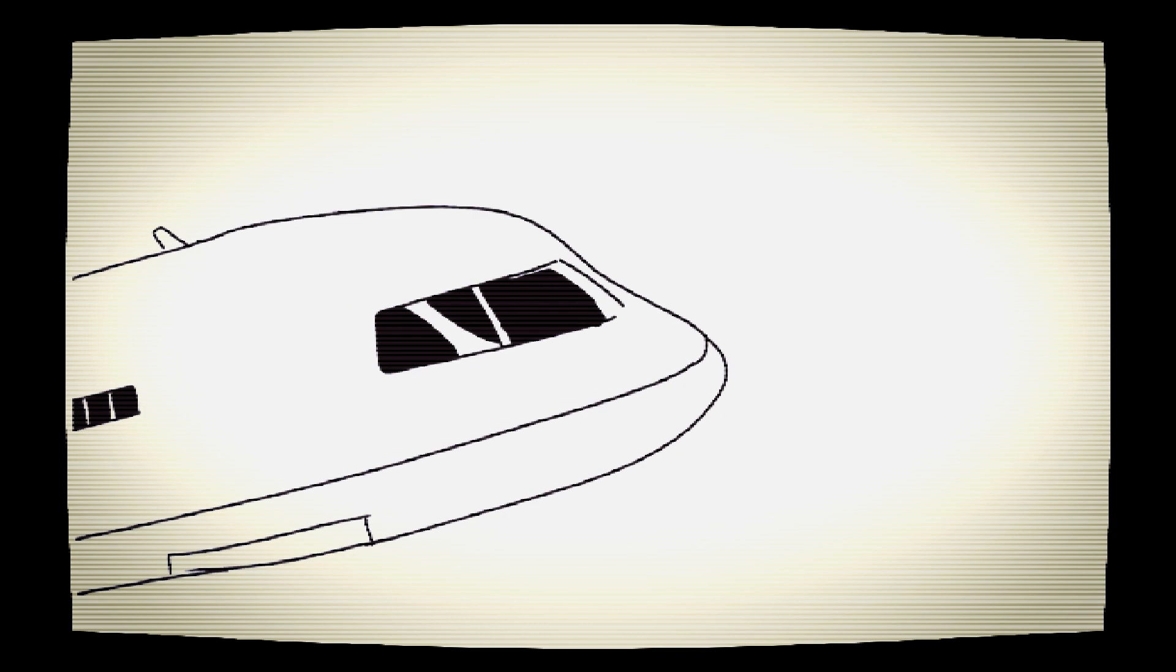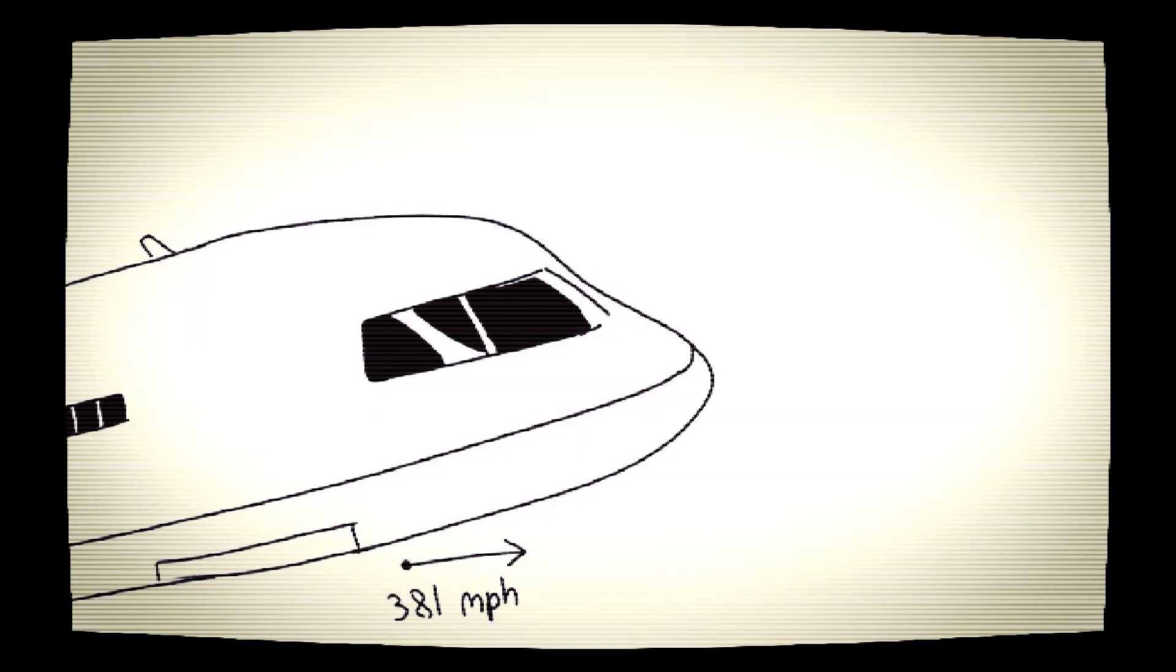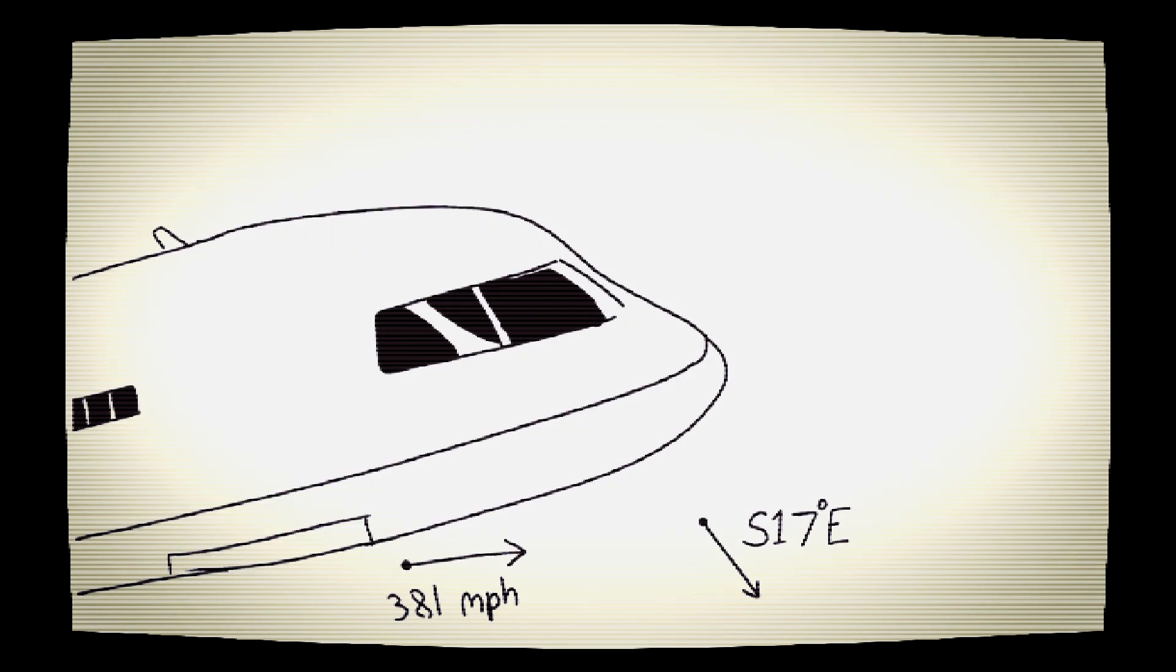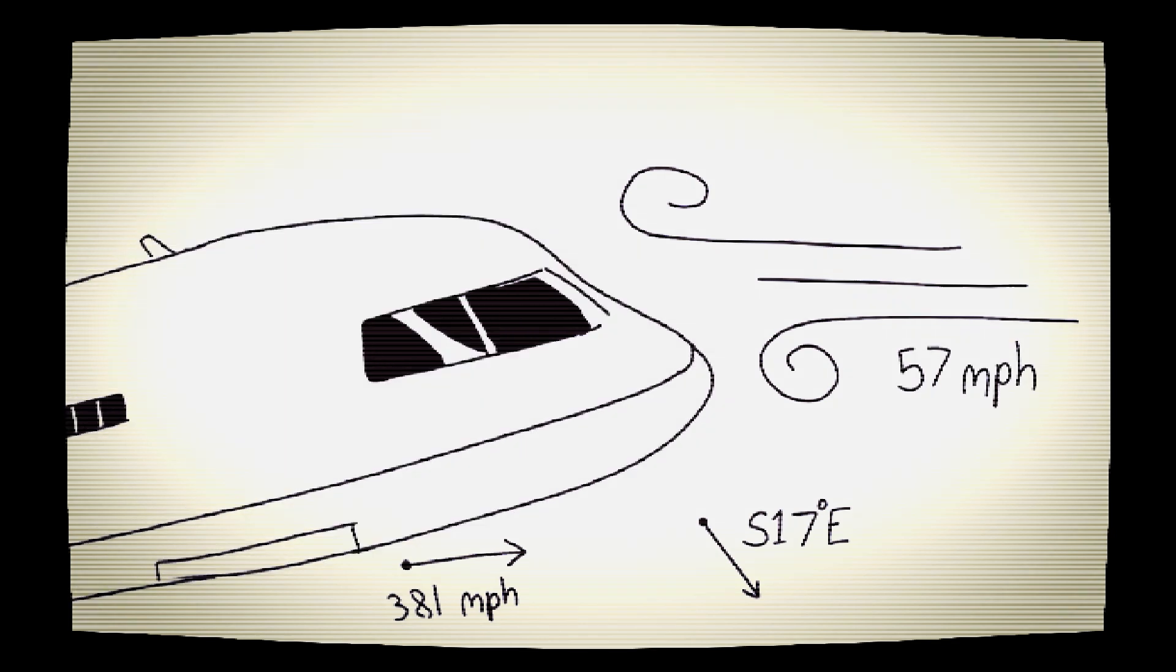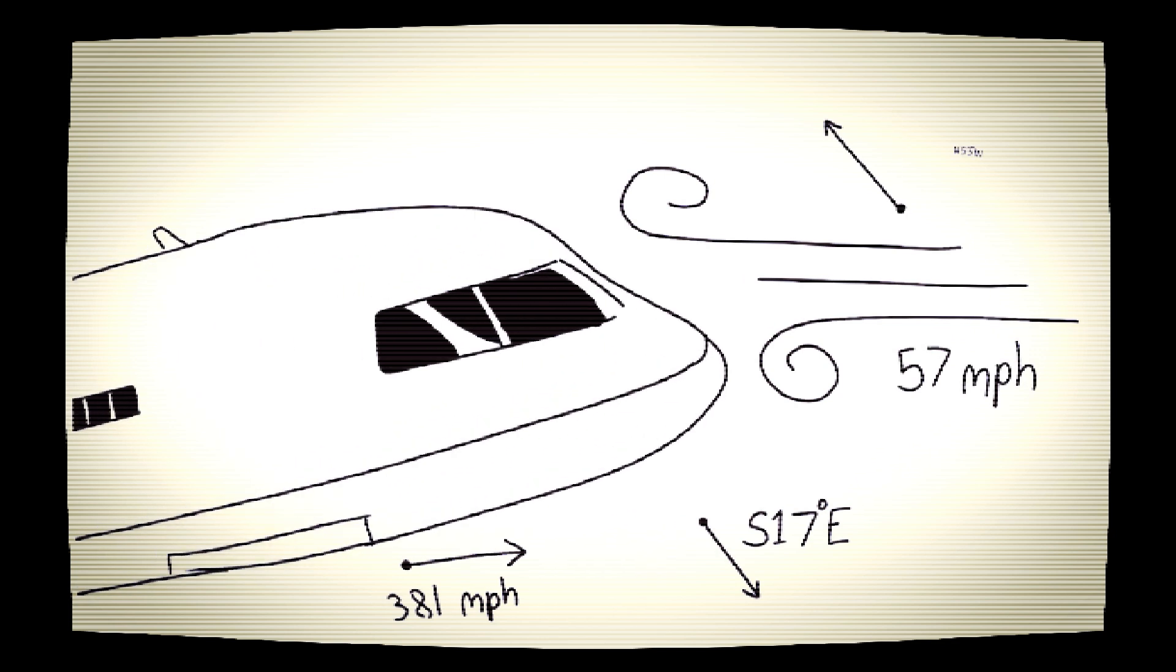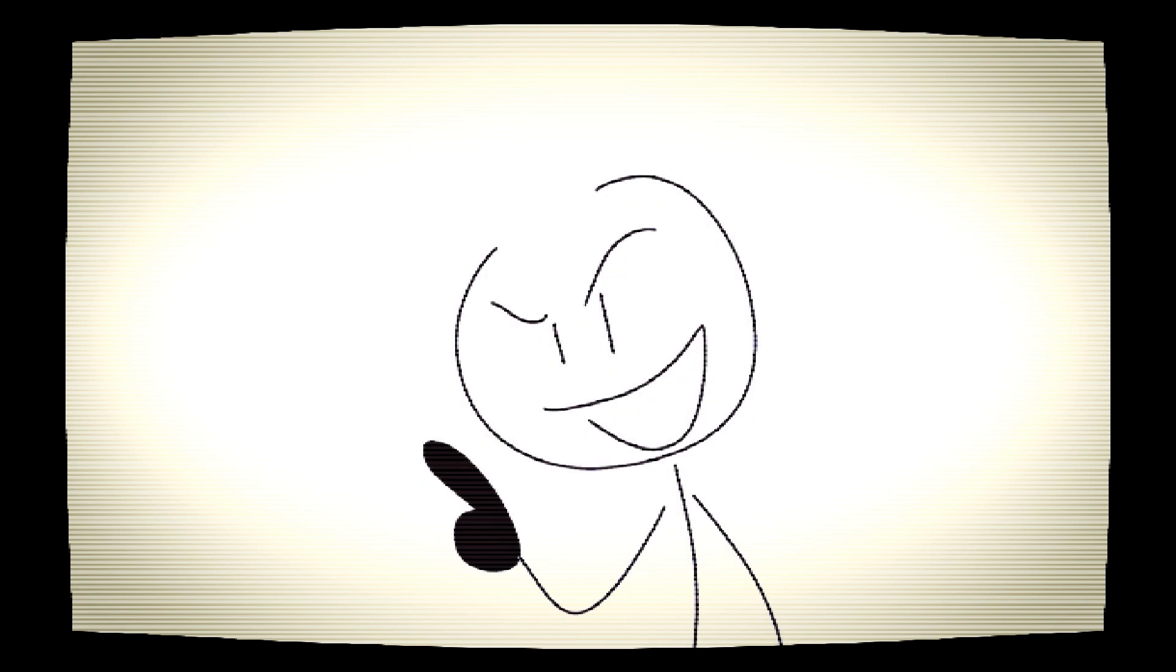Let's say this here plane is moving at a speed of 381 miles per hour on a southeast bearing of 17 degrees. And as it flies, we introduce another vector of a headwind hitting the plane with a speed of 57 miles per hour from a northwest bearing of 53 degrees.